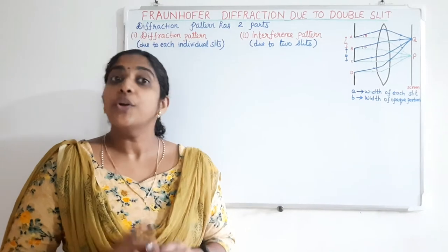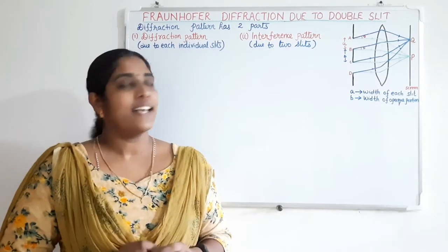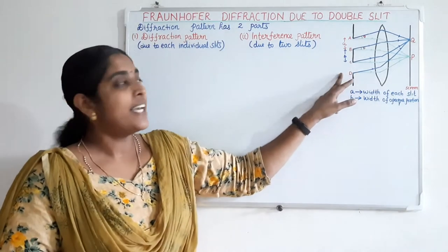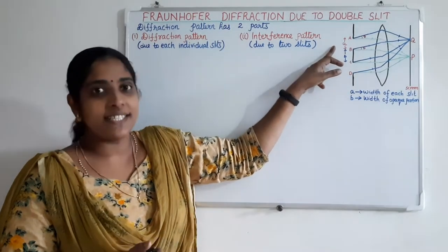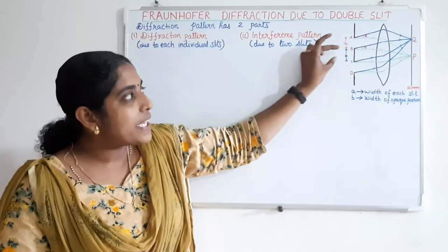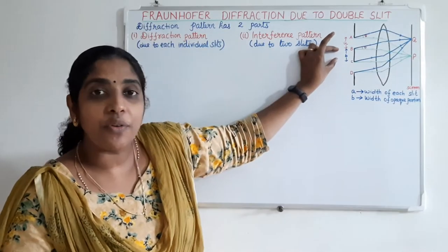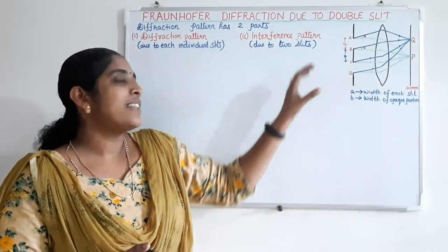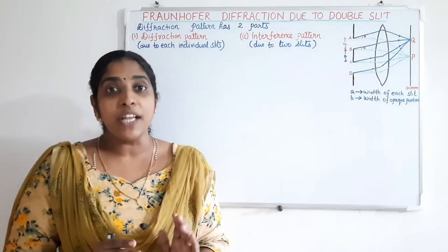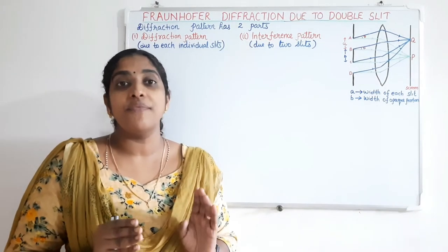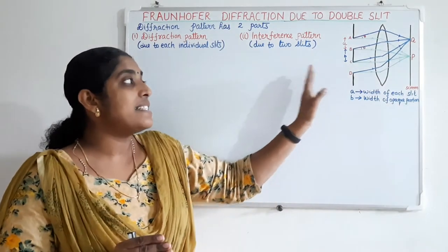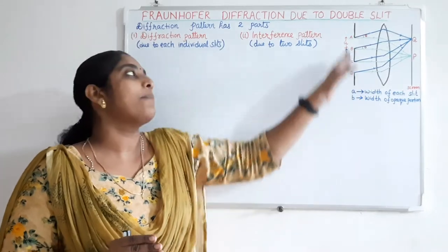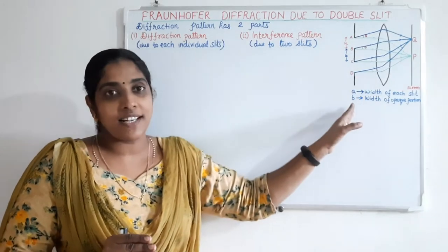Now we can consider two slits A, B and C, D. Let A be the width of each slit and B be the width of the opaque portion in between the slits. Then a plane wavefront of wavelength lambda is incident normally to the plane of this slit.